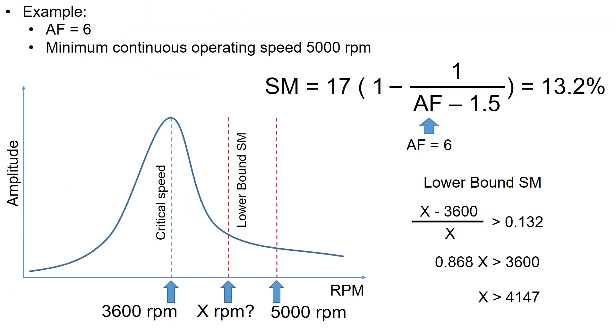Let's look into an example with amplification factor of 6 and the minimum operating speed of 5000 rpm and the critical speed at 3600 rpm. Since the critical speed is below the minimum operating speed, you should use the equation shown on the right. If you insert the amplification factor of 6 into the equation, it gives 13.2 percent.